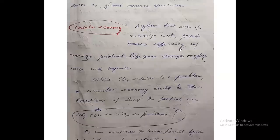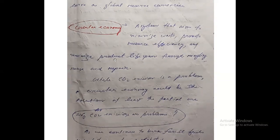Now let's move to the next important topic: circular economy. A circular economy is a system that aims to minimize waste, promote resource efficiency, and focuses on the three Rs — recycling, reuse, and repair. While carbon dioxide emission is a problem, a circular economy could be at least a partial solution.